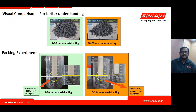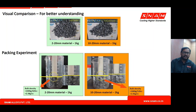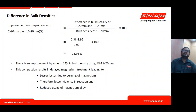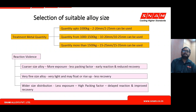A packing density calculation was performed using a measuring jar as a model treatment ladle pocket, comparing wider size distribution against narrow size distribution material. For the same weight of material, packing density and bulk density are higher with wider size distribution than with narrower size distribution. The result: wider size distribution reduces magnesium burning losses, reduces reaction violence, and reduces alloy consumption — or delivers maximum benefit from the same alloy content and the same addition rate.